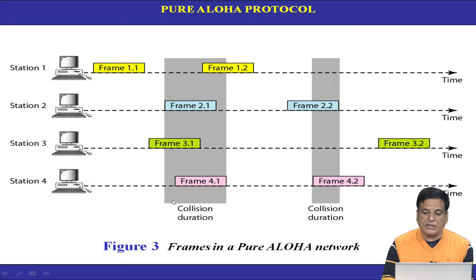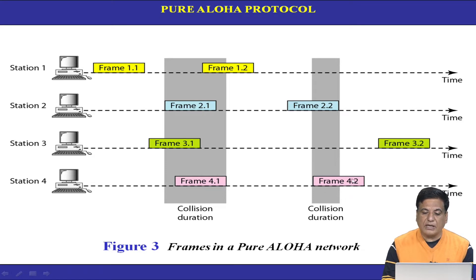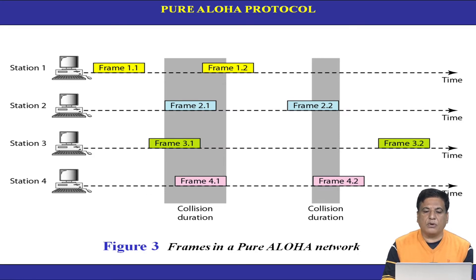There is a collision occurring in these frames. Frame 1.1 is sent alone so there is no collision for that frame. Frame 2.2 and 4.2 are again colliding, while frame 3.2 does not have any collision. So we find that if we use the protocol where any station with a frame sends it immediately, there are a lot of chances — a high probability — of collisions.